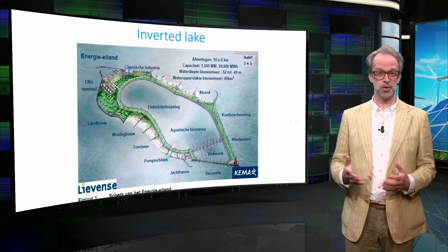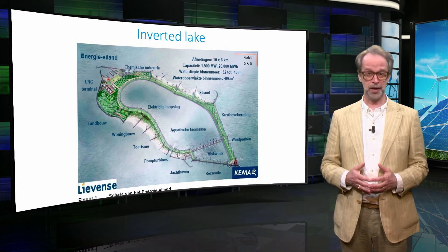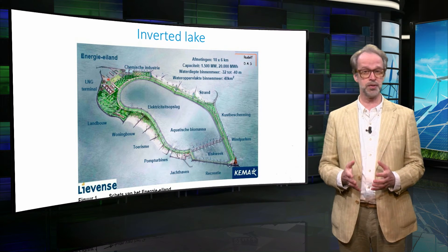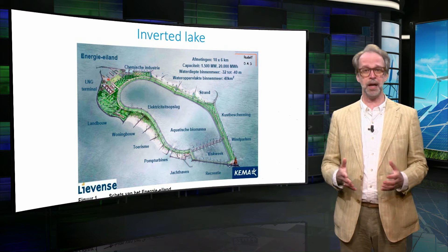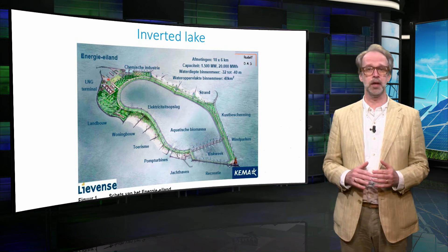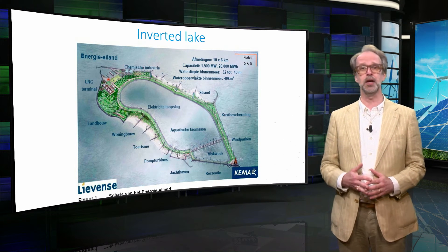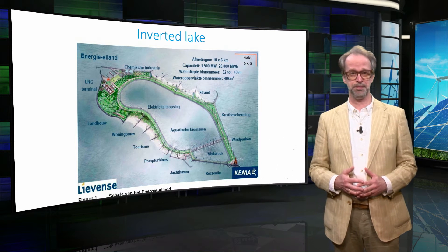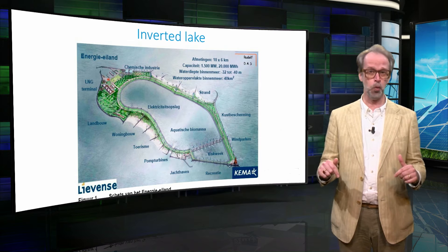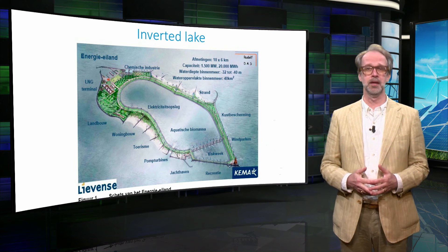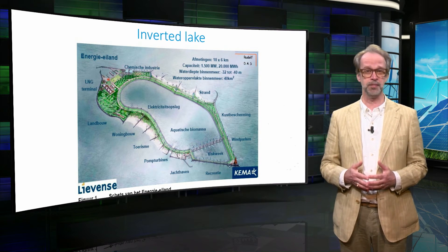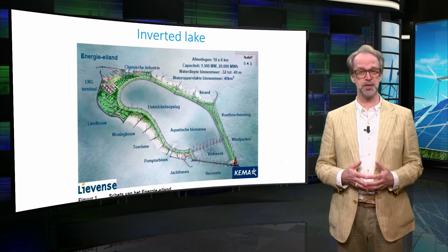The second example is the so-called inverted lake, where there is a lower reservoir of water enclosed by the sea. In case of excess energy, the water is pumped out of the lake and the water level decreases down to minus 40 meters. If energy is needed, water is allowed to flow back into the lake. This method has again a good cycle efficiency. However, the storage capacity is limited.